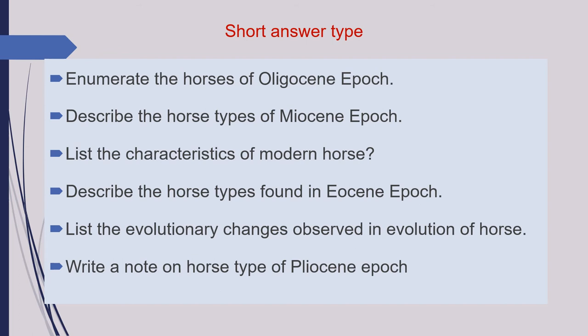Next is: list the evolutionary changes observed in evolution of horse. And the last question of this category is: write a note on horse types of Pliocene Epoch.